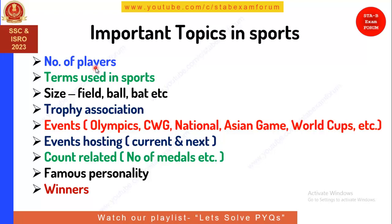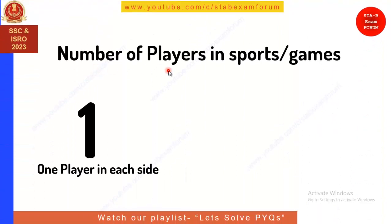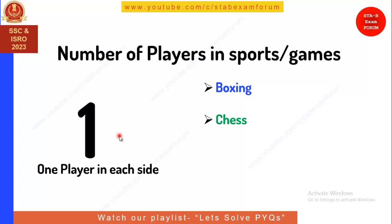Let's begin the session. Be comfortable and take a pen or pencil to note down what we cover. Starting with one player on each side — so there are two sides and one player per side. Sports in this category include boxing, which is always a one-to-one match, and chess, which is also played one-to-one and never as a team game.